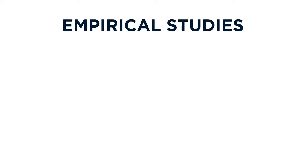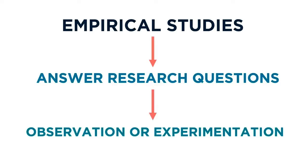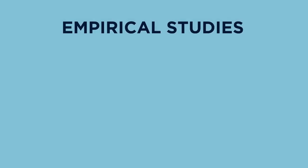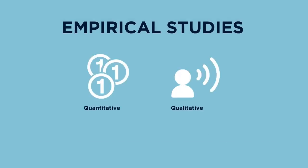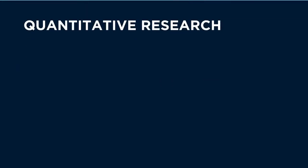The goal of an empirical study is to answer research questions through observation or experimentation. Empirical studies can be quantitative or qualitative, and it's important to understand the difference. In this video, we'll compare quantitative and qualitative scholarly articles in order to understand these different approaches to research. Let's start by comparing the goals of quantitative and qualitative approaches.